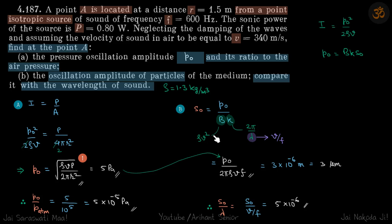We put those values here. Let's assume the density of air is 1.3 kg/m³. Once we put those values, we get the displacement amplitude to be P₀/2πρvf, which comes to be 3 micrometers.